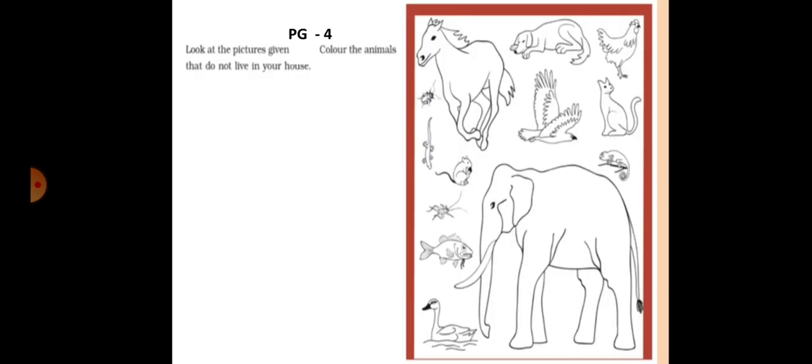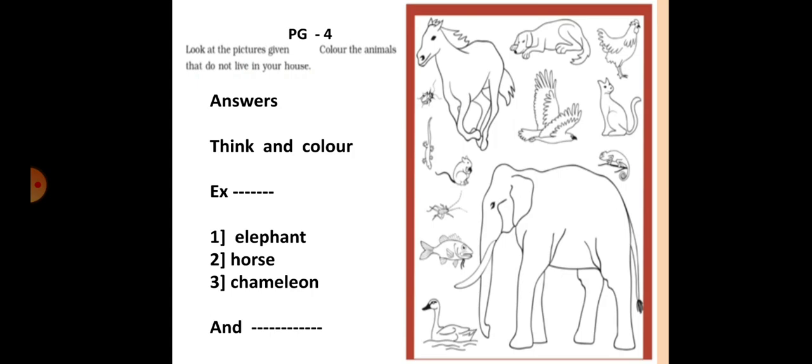In the next page, page number four, you have got a picture. Look at the picture given and color the animals that do not live in your house. There are some animals which also live in our house, very few tiny animals like ants, housefly, sometimes mosquitoes, sometimes rats. You have butterflies or snails in your garden, grasshoppers. But here in this picture you have to observe very carefully and color the animals which do not live in your house. Be careful.